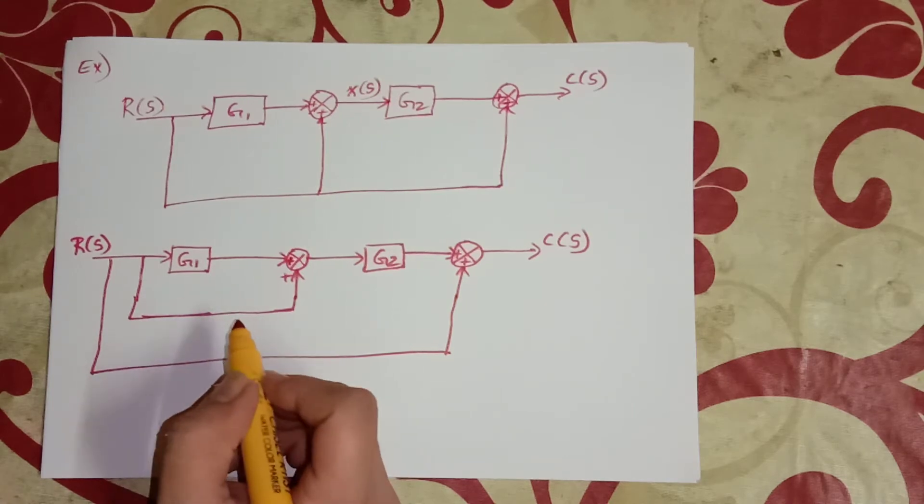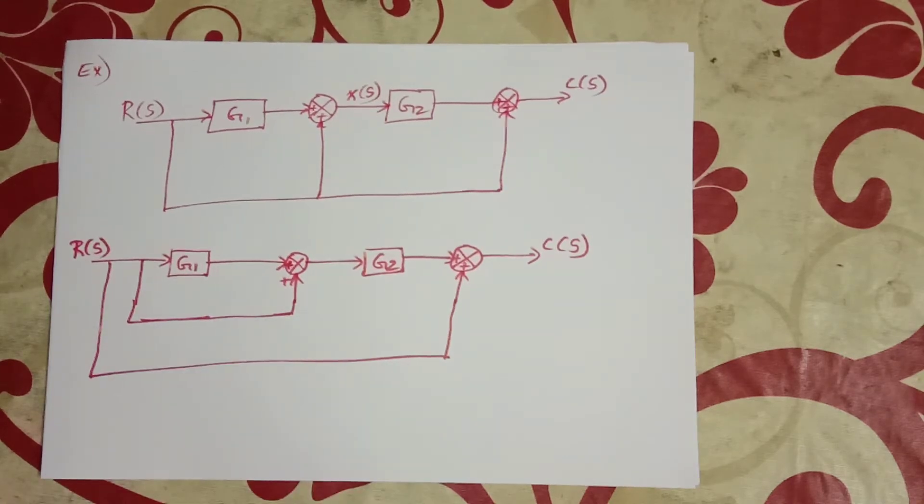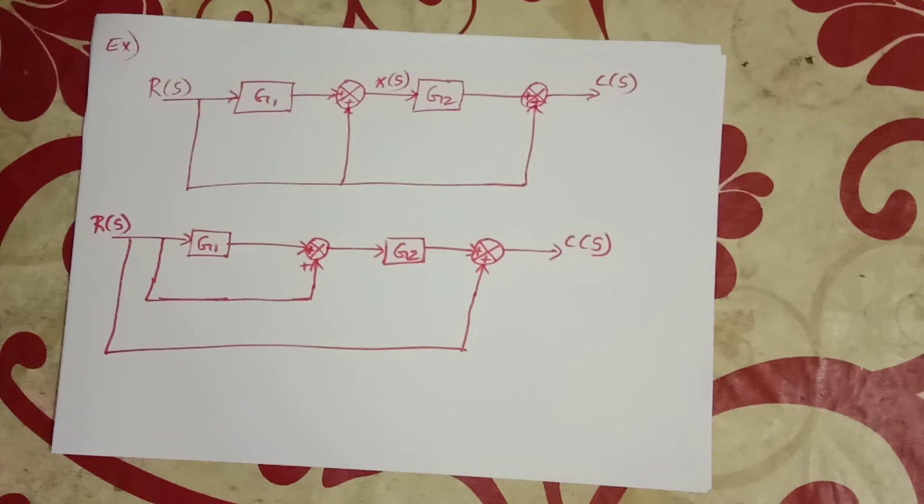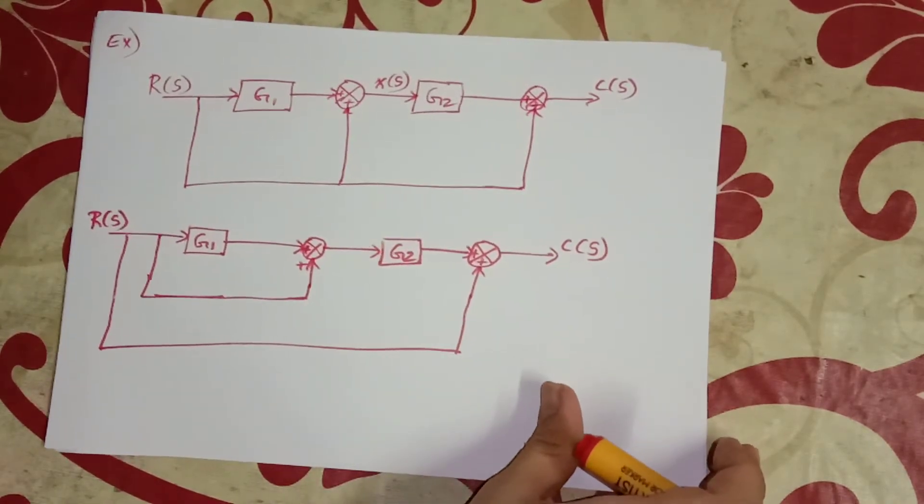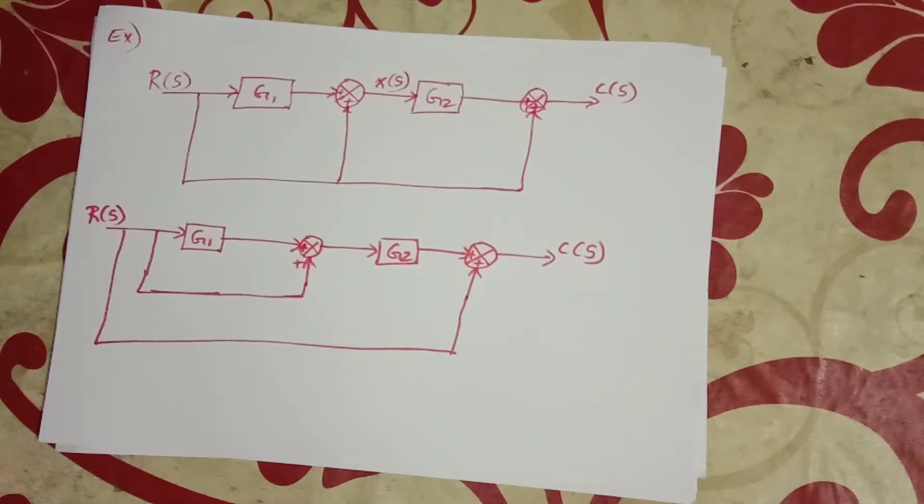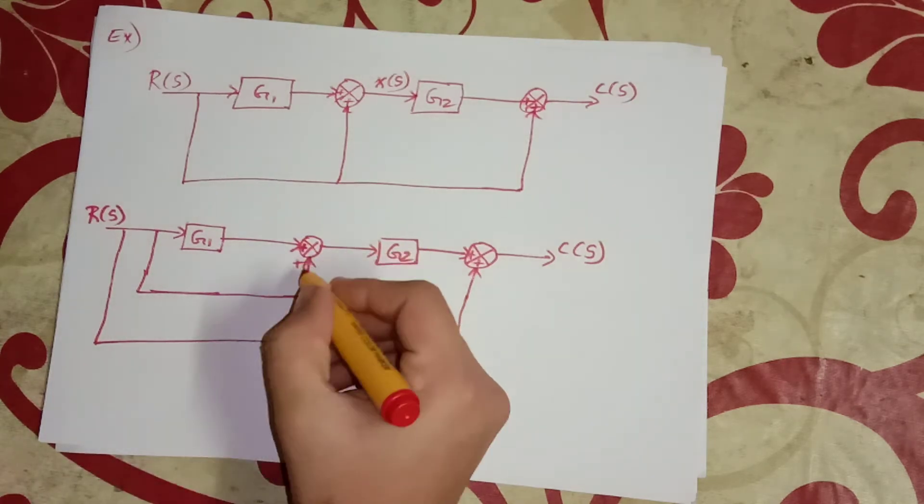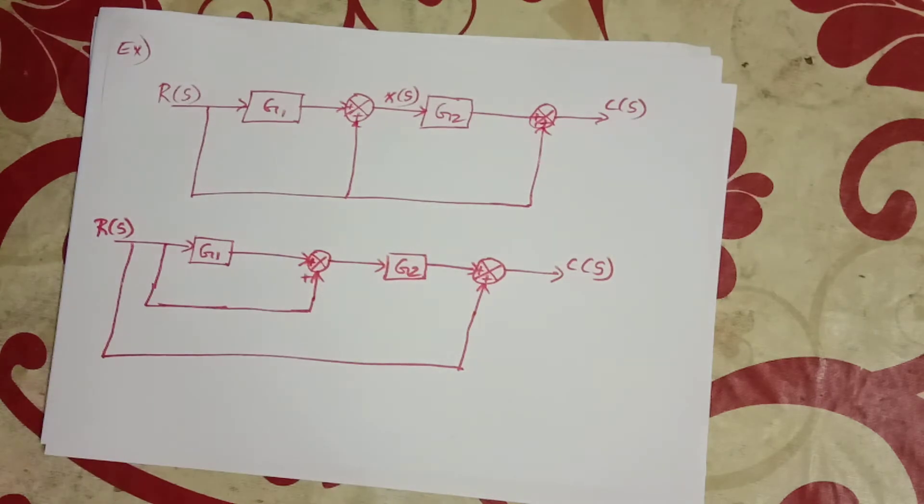Here we can apply forward blocks in the forward path. Carefully observe the direction of signal flow - here it is in forward direction, so we can write the next step.